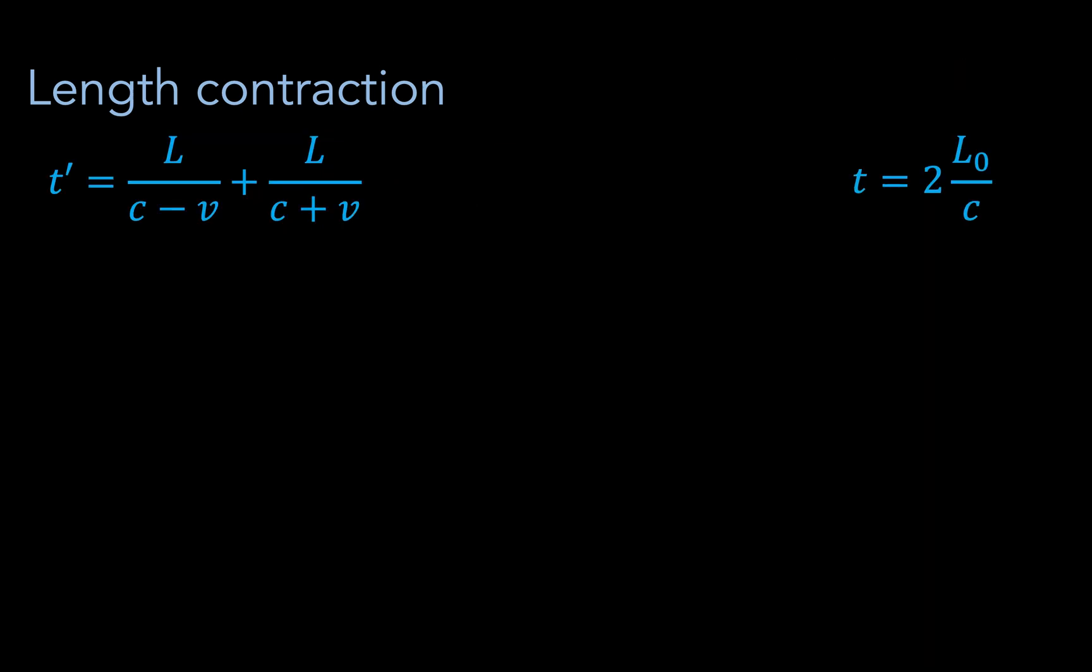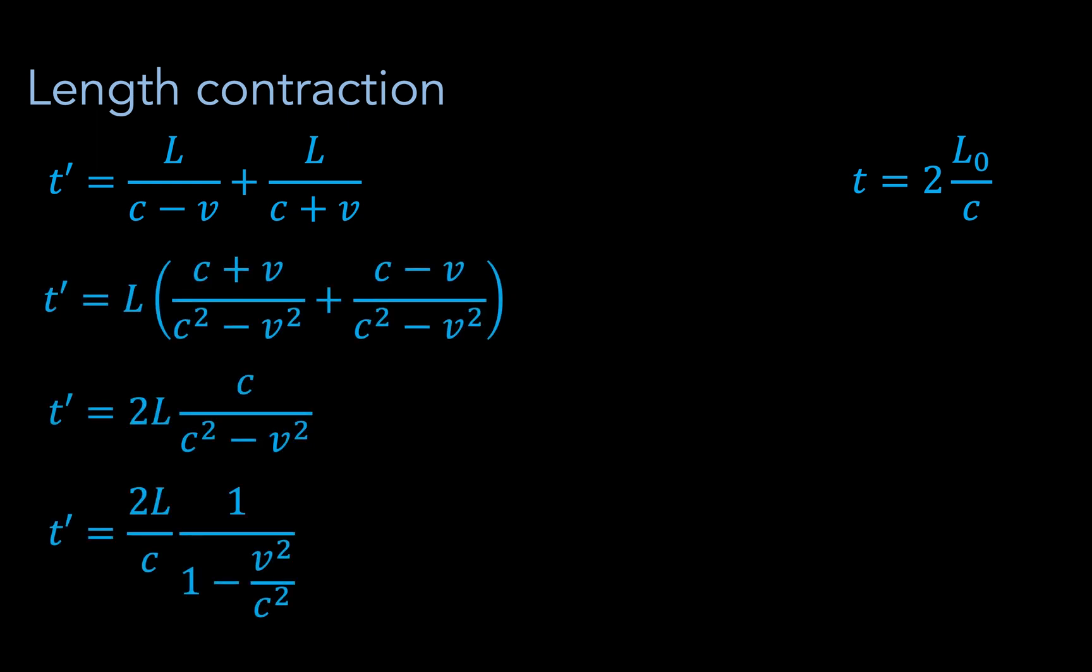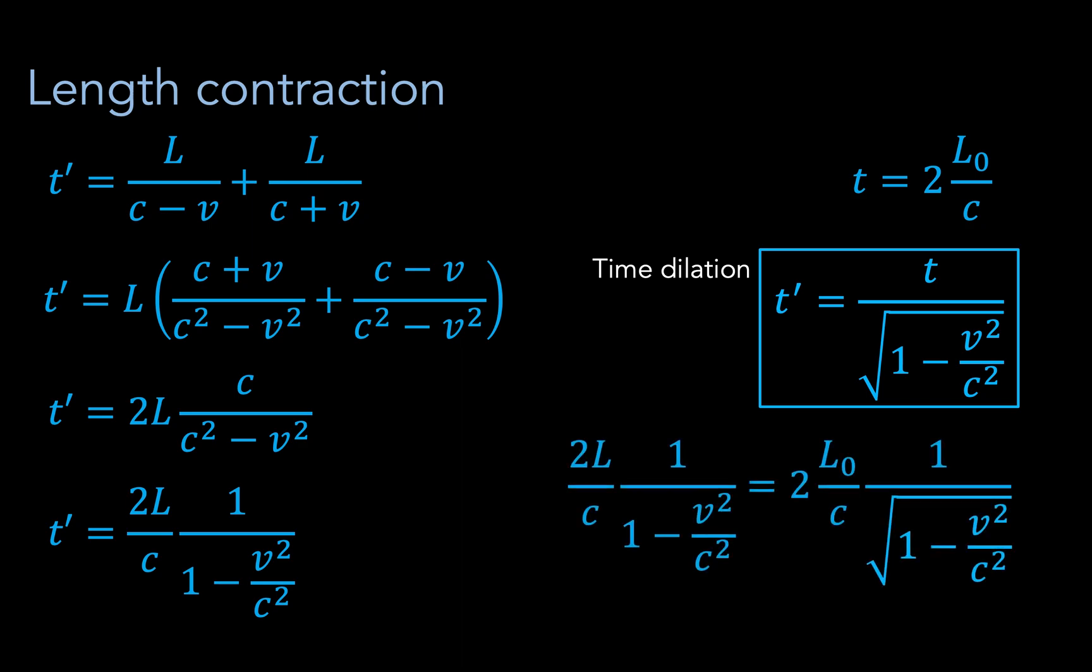From here, it's just mathematics. We can apply a similar derivation to the Michelson and Morley case in the previous video to get this expression for T prime. Now we have expressions both for T and T prime and we can summon our trusty time dilation equation, then substitute the expressions.